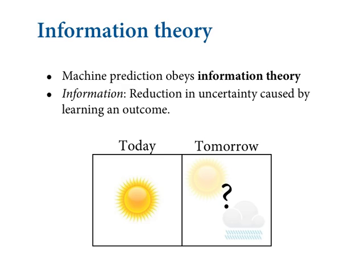Where we left off last time, I said that we're going to need to appeal to information theory because the way machine prediction works follows the laws of information theory. If we learn a little bit of information theory, it'll help us have a reasonable and coherent framework. The goal in this first bit is to derive the gold standard way to score a model's accuracy — for any type of model, whether Gaussian, frequentist, Bayesian, or anything. There's a single gold standard way to score it, and it comes from information theory.